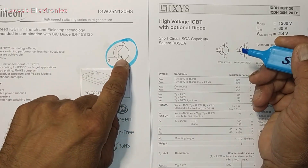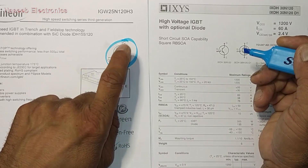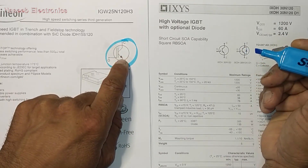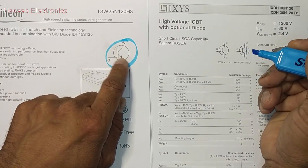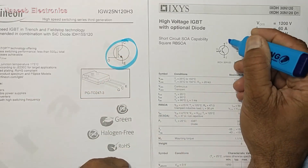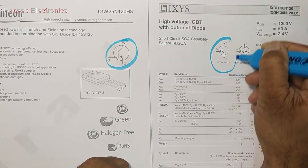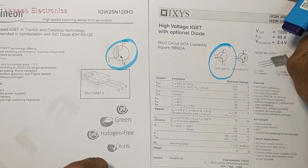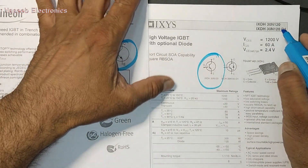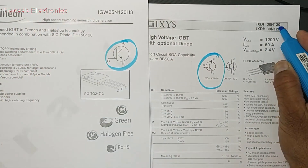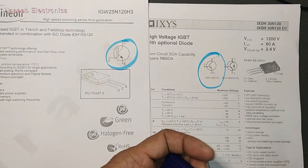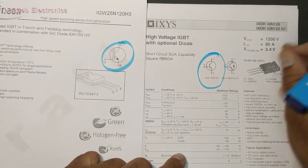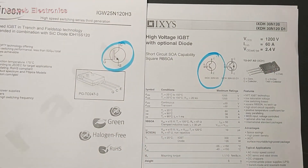The first parameter we have to check is the structure configuration — whether it is using a recovery diode or not. We have to select the correct one because in this part number there is '120' and '120 D1', so we have to select the '120' variant (without the diode).